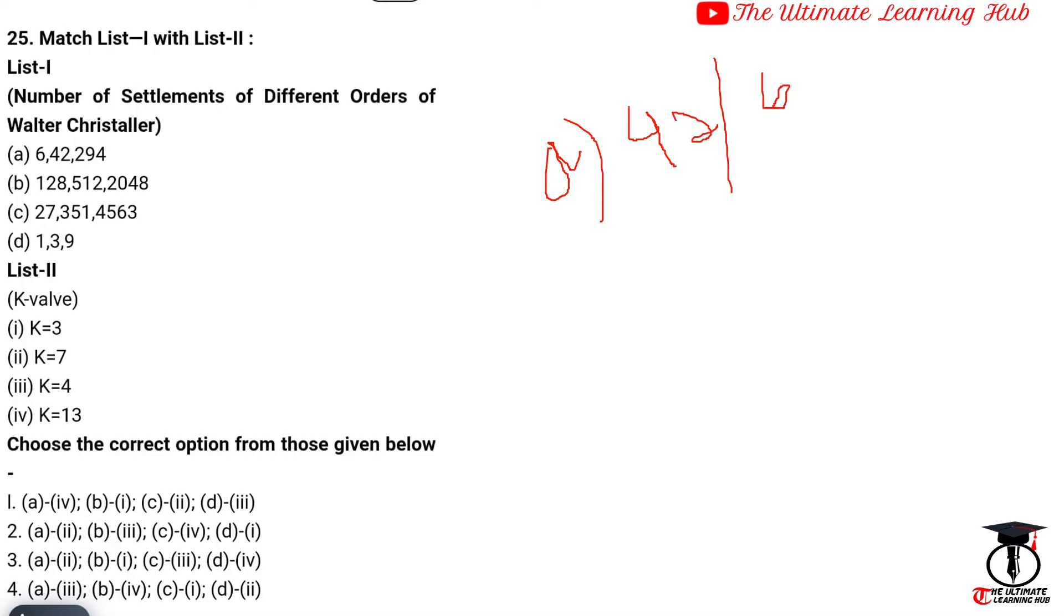6 goes into 42 seven times, so K equals 7. So here is 7, okay.